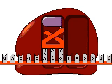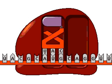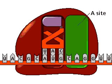The large ribosomal subunit joins the small ribosomal subunit, mRNA, and the first tRNA to complete the initiation complex. The first tRNA fits snugly into the P site of the complex. The A site is empty.